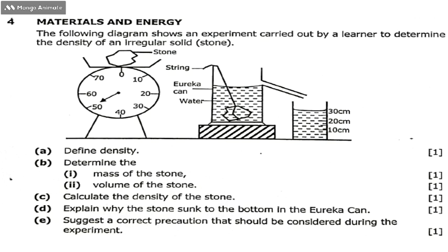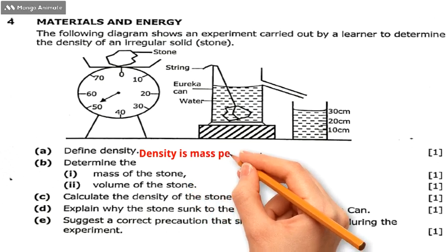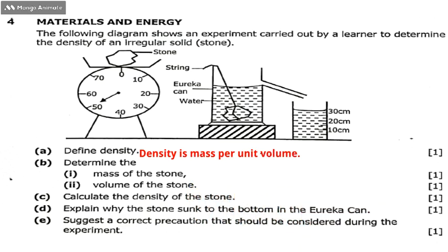Question 4a is: define density. Density is mass per unit volume. Question 4b(i) is: determine the mass of the stone.